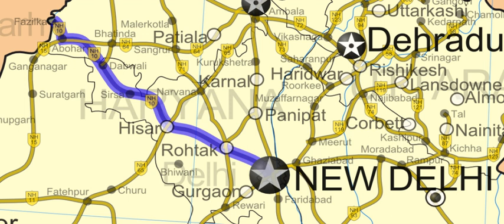The concession period for the project, including the construction period, is 22 years. The National Highways Authority of India's National Highways Development Project (NHAI NHDP) Phase 3 project has acquired an additional 591.84 hectares of land for road widening and building.